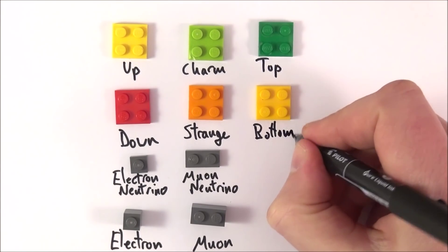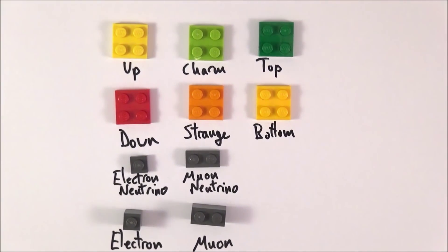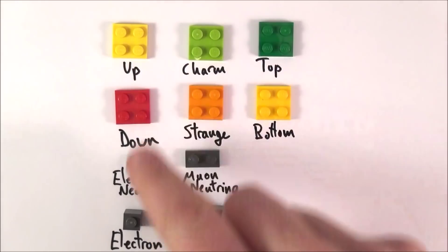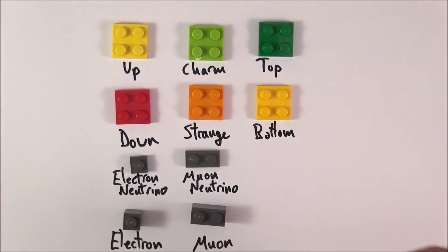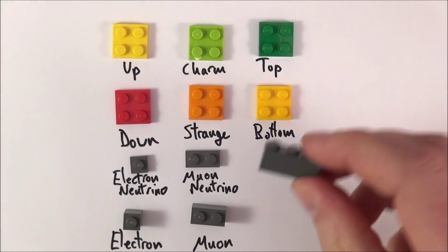These have other properties. What we have now is basically a generation of matter here, another generation here. That means there's also another particle which is like an electron.